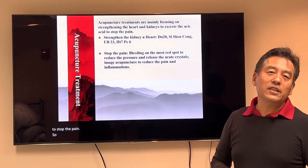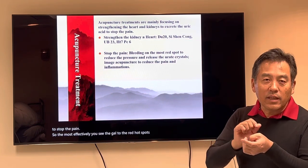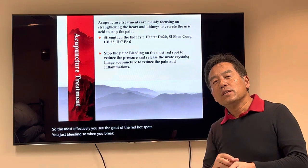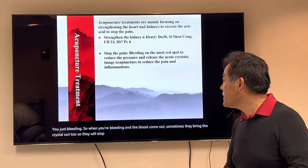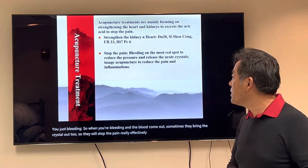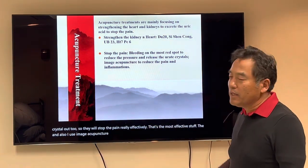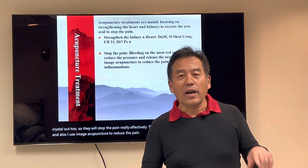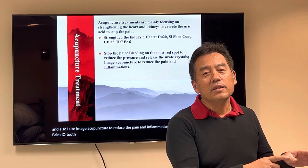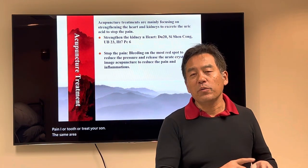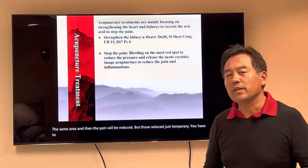The most effective way when you see gout — the red hot spots — is bleeding therapy. When you bleed, the blood that comes out sometimes brings the crystals out too, which stops the pain really effectively. That's the most effective technique. I also use image acupuncture to reduce pain and inflammation. For example, if you have pain in your foot, treat the same area on your thumb, and the pain will be reduced. But those reductions are just temporary — you have to release the uric crystals to truly resolve it.